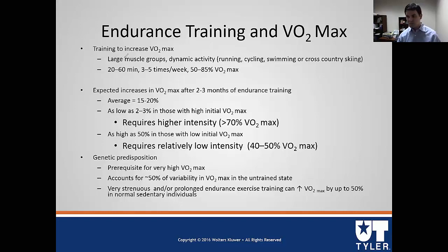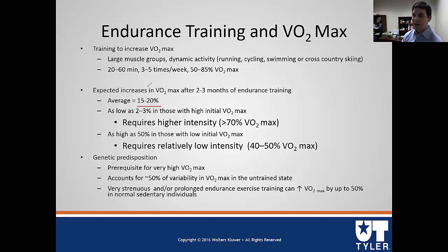General recommendations are 20 to 60 minutes, 3 to 5 times a week, at a moderate intensity of 50 to 85%. This is a broad recommendation that works for most people. After 2 to 3 months of this protocol, someone going from sedentary to exercising would typically see a 15 to 20% increase in VO2 max.